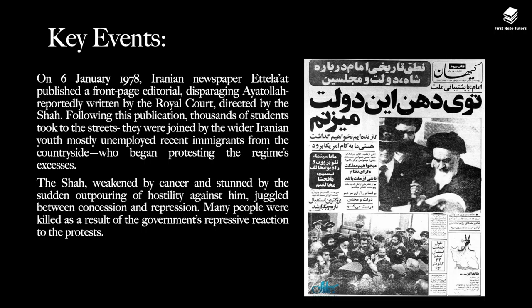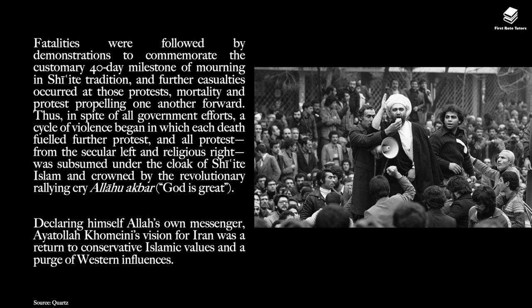When thinking about the unfolding of the Iranian Revolution, let's look at key events. On 6 January 1978, the Iranian newspaper Ettelaat published a front-page editorial disparaging Ayatollah Khomeini, reportedly written by the Royal Court and directed by the Shah. Following this publication, thousands of students took to the streets, joined by the wider Iranian youth — mostly unemployed recent immigrants from the countryside — and they began protesting the regime's excesses. The Shah, weakened by cancer and stunned by the sudden outpouring of hostility, juggled between concession and repression. Many people were killed as a result of the government's repressive reaction. Fatalities were followed by demonstrations to commemorate the customary 40-day milestone of mourning in Shiite tradition, and further casualties occurred during these protests, with mortality and protests propelling one after another.